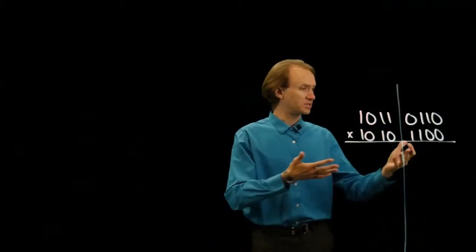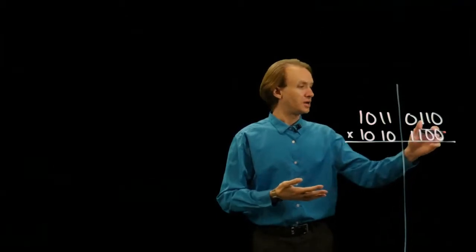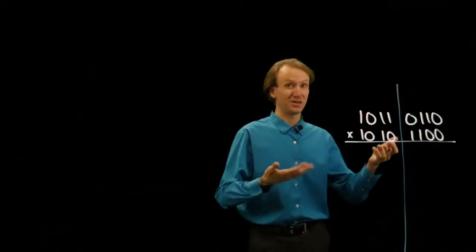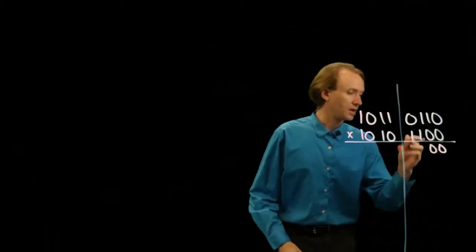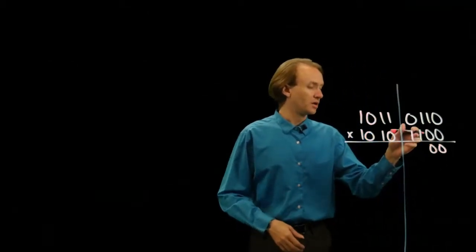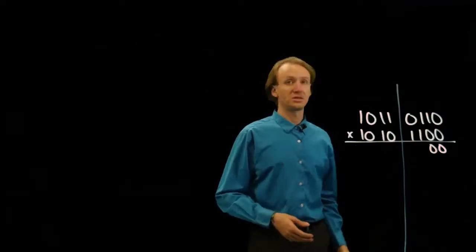Now I can apply the basic algorithm that we've been using. Anytime where I see a zero, I'm just going to write down zero because zero times anything is zero. Anytime I see a one down here, I'm going to copy down the top number.